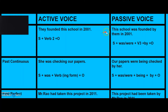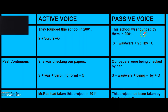Now we are going to see the conversion: 'School was founded by them in 2001.' The subject pronoun has become the object pronoun 'them' in passive voice. You must be wondering why I have used 'was' before the past participle form of the verb.